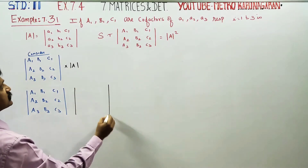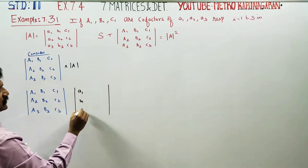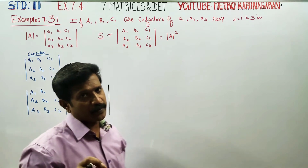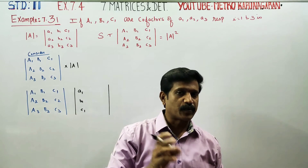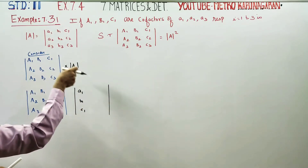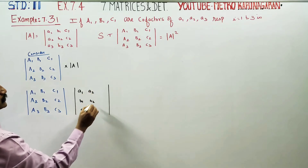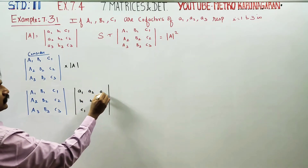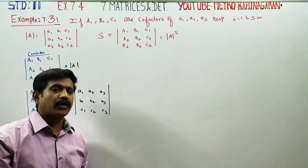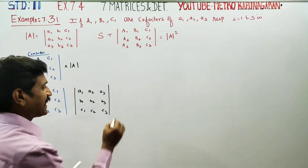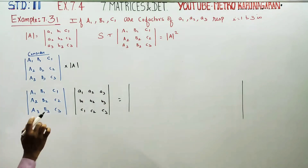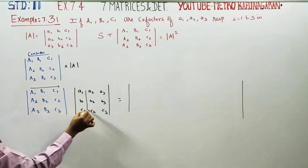What we are going to do on the LHS is multiply this matrix. We multiply it by the sum — in the determinant style. Instead of ordinary row into column multiplication like in a matrix, we change the style and do row into column, row into column multiplication.